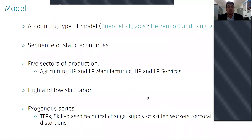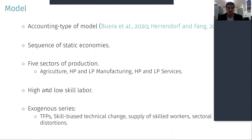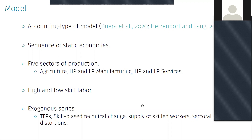I take an accounting-type model in the spirit of Boer and co-authors and Herendorf and Fang, which is a sequence of static economies. In this model, I have five sectors of production: agriculture, manufacturing, and services, where manufacturing and services are subdivided into high productivity and low productivity subsectors. In each sector, I can potentially employ both high-skilled and low-skilled labor. I introduce exogenous series calibrated for sectoral TFPs, sectoral skill-biased technical change, the aggregate supply of high-skilled workers, and a set of sectoral distortions. The model allows me to quantify the impact of these exogenous series on the transformation process.